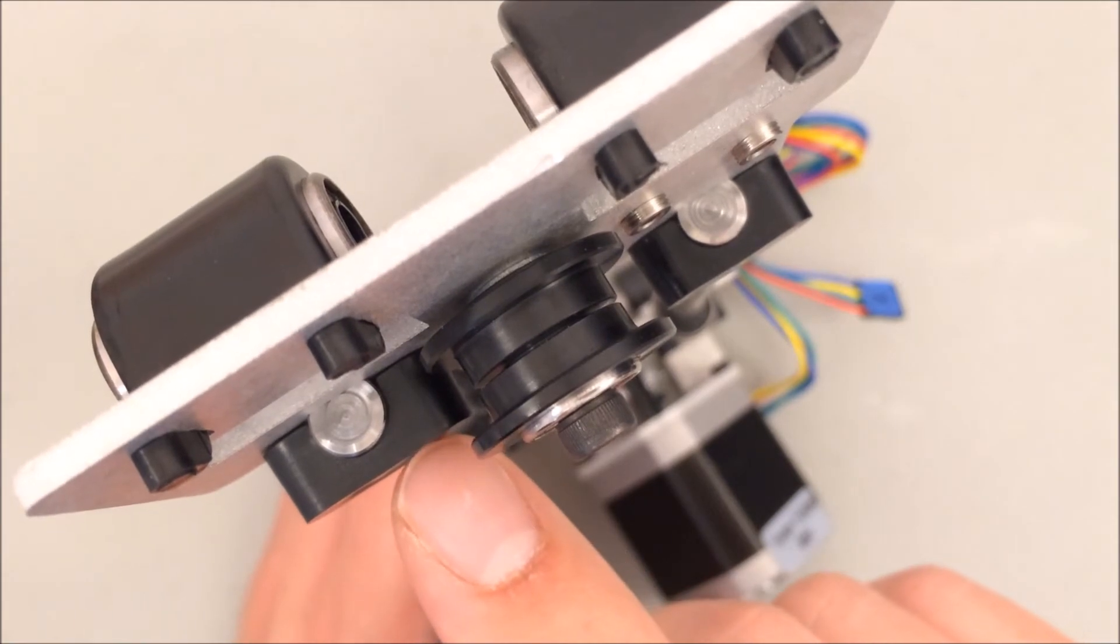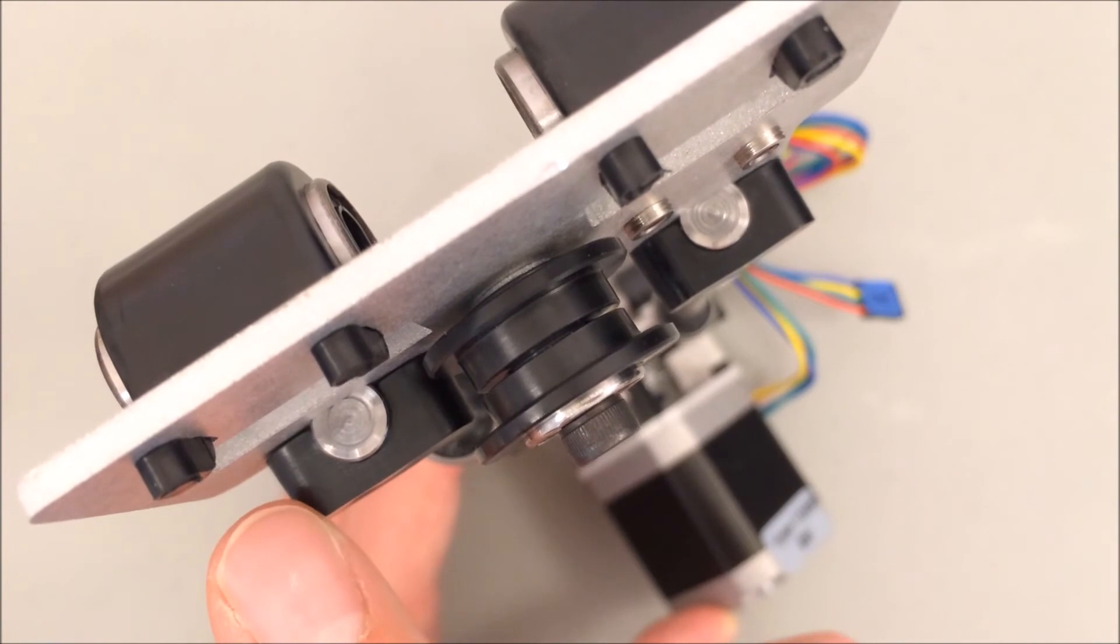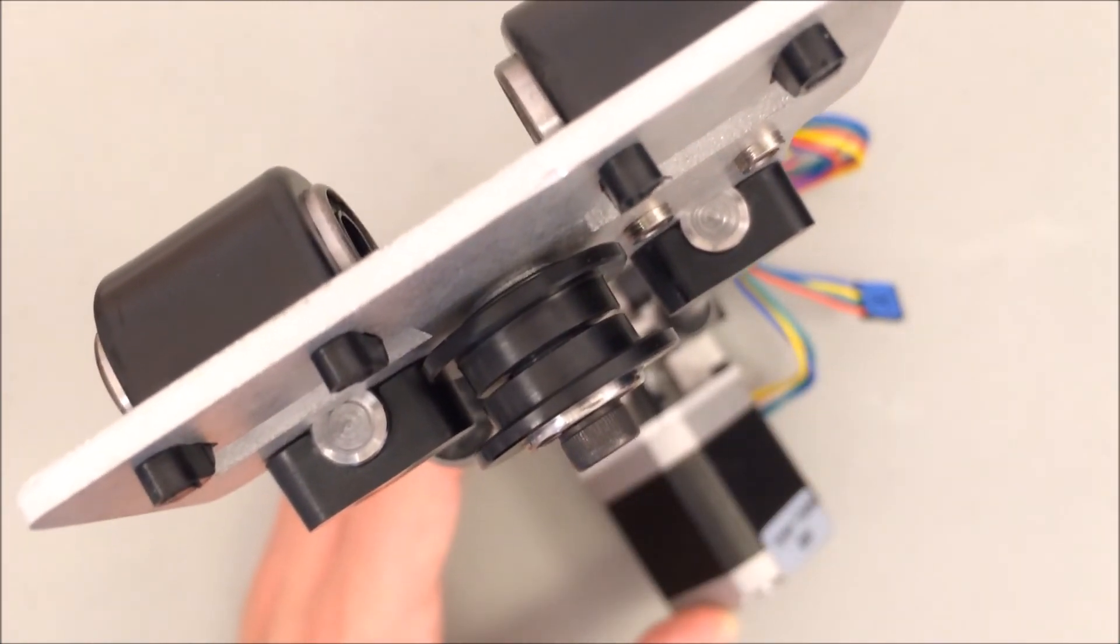I flipped this over to show you that the clamps when tightened come all the way down to the frame. There's very little air pocket here if any at all. Once yours look like this you're ready to move on.